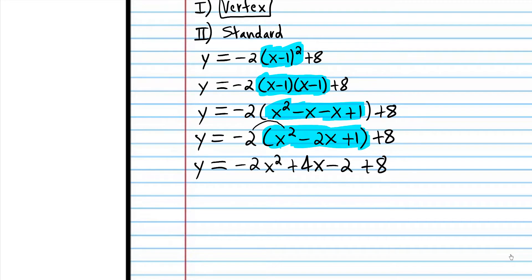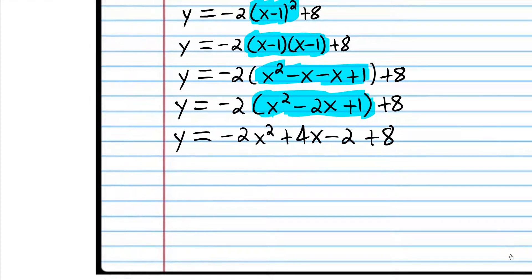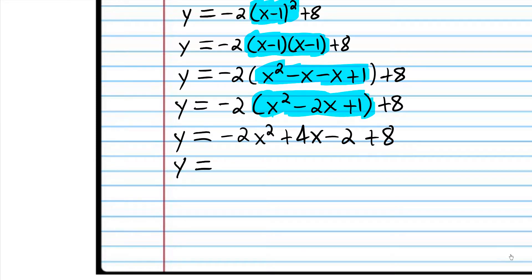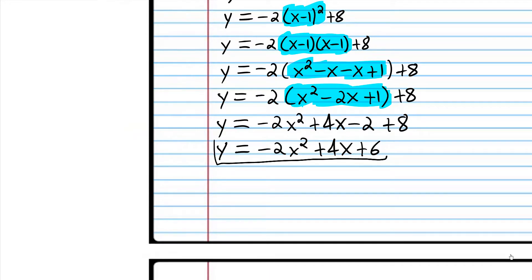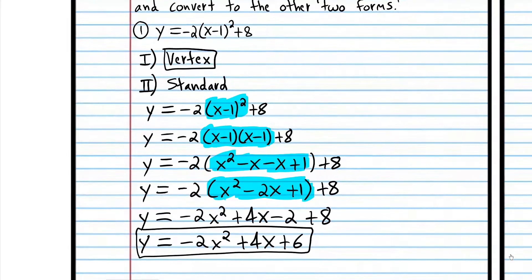So I multiplied negative 2 times x squared, then negative 2 times negative 2x, and negative 2 times 1. Now we can combine the constant terms: negative 2 plus 8 is 6. And that is standard form. So we took vertex form, seen in yellow up here, and converted it to standard form, seen in yellow down here.